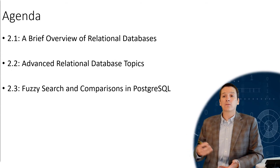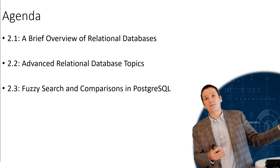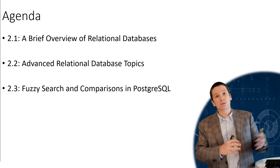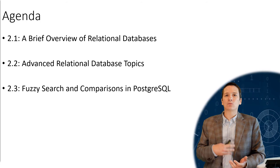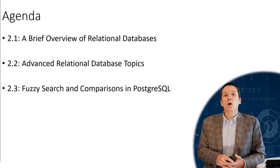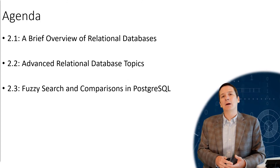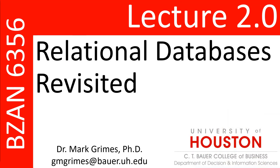For the rest of the videos in this relational database lecture series: in video 2.1, we're going to give a brief overview of relational databases, covering the content at a high level that we'd cover in a normal relational database course. In video 2.2, we're going to get into some slightly more advanced relational database topics — what you might expect to see in a database 2 course. And then in video 2.3, we're going to look at some specific functionality within Postgres that allows us to do some really neat fuzzy search and comparison operations. So with that, let's go ahead and get started. We'll see you next time.